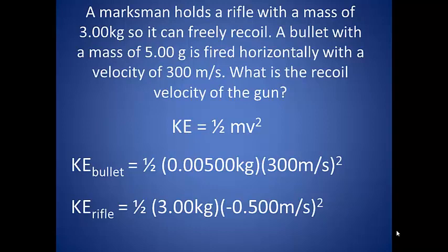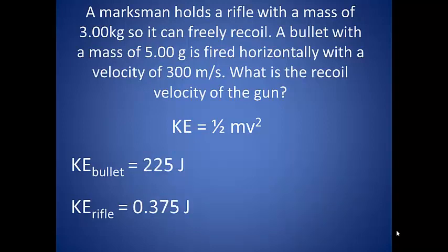The kinetic energy for the rifle is one-half of 3 kilograms times negative 0.5 meters per second squared. We end up with the kinetic energy of the bullet being 225 joules and the kinetic energy of the rifle is 0.375 joules.